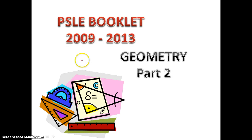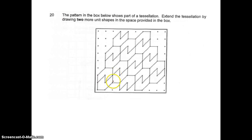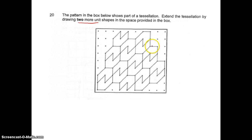Hi everyone, let's continue with our PSLE booklet geometry part 2. The pattern in the box shows part of a tessellation. We need to extend the tessellation by drawing two more unique shapes. I can draw them here and here. To find the pattern, I look at the figure - I can join this part and it would be similar, so I just follow this pattern.